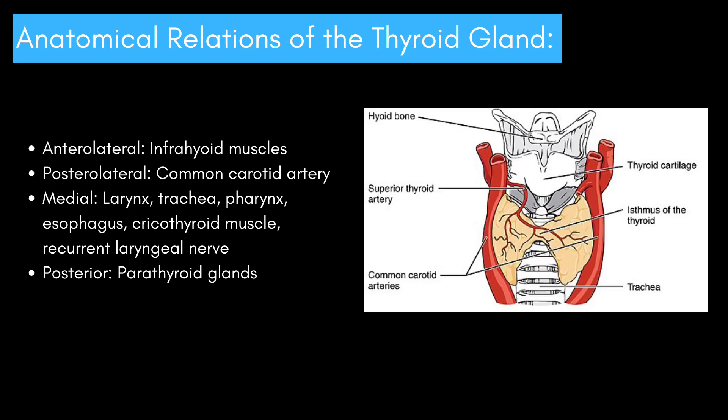Let's start off by taking a look at anatomical relations of the thyroid gland. Anterolateral: infrahyoid muscles. Posterolateral: common carotid artery. Medial: larynx, trachea, pharynx, esophagus, cricothyroid muscle, recurrent laryngeal nerve, and posterior parathyroid glands.